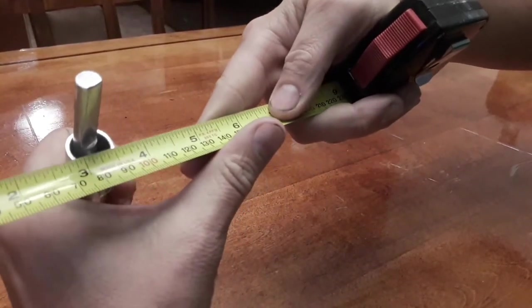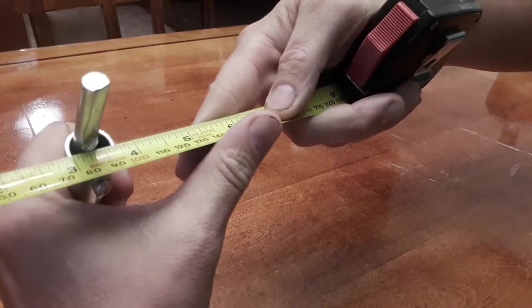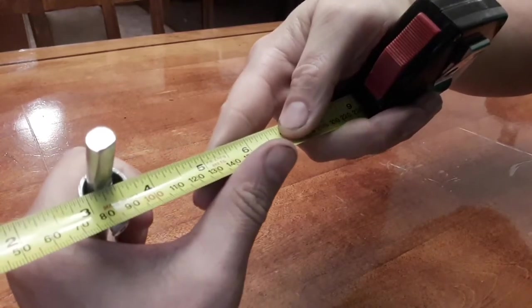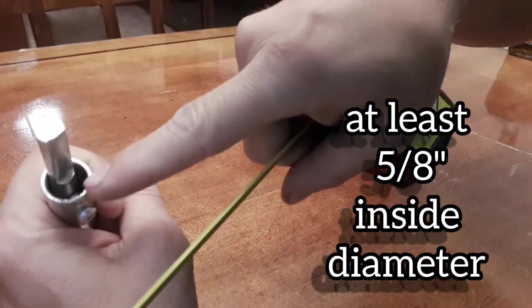Something that's a little more important is the size of the hole. You're going to need at least five eighths of an inch across the tube part.